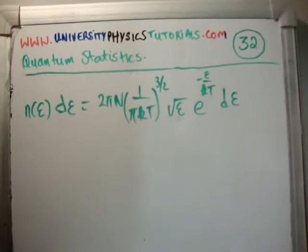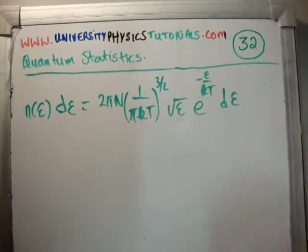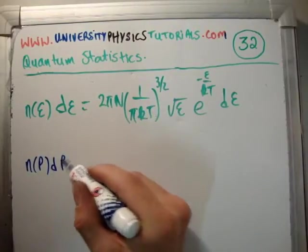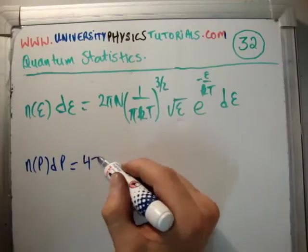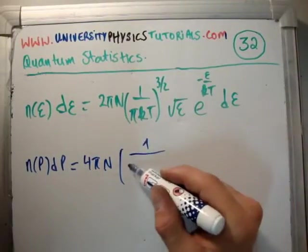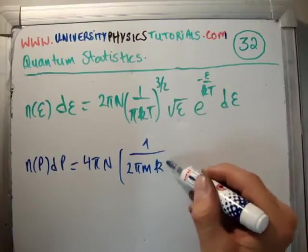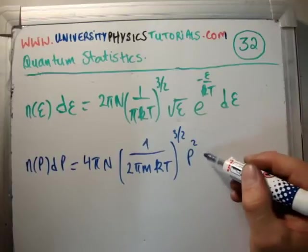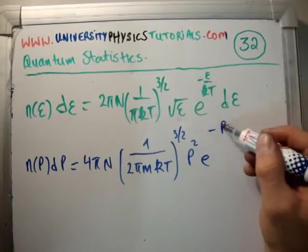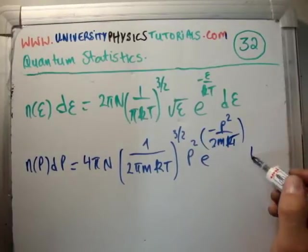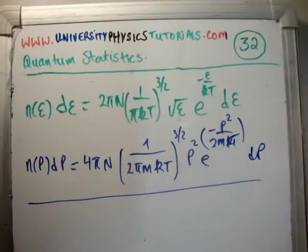So, if we go ahead and do that, we are going to get the following formula. We are going to get n, this time as a function of momentum, dp is equal to 4pi n. Then, we are going to get 1 over 2pi m kt to the 3 over 2 p squared e to the minus p squared over 2m kt dp. And that is the density of states in scalar momentum space.